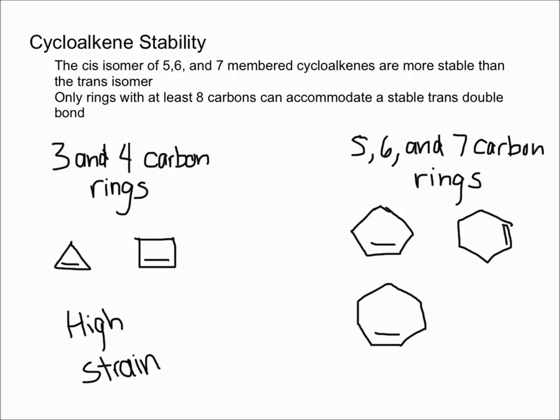On the right side I've drawn five, six, and seven carbon rings, and I've drawn these rings as cis isomers. This is due to the fact that cis isomers are more stable than trans isomers. If you have a five, six, or seven carbon ring, you're always going to have a cis isomer. The trans isomer will not form.